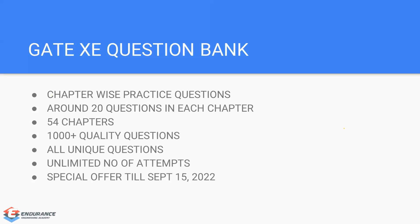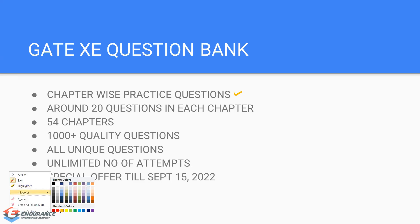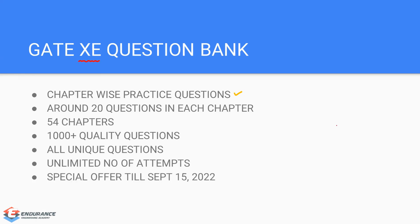When it comes to the GATE XC Question Bank, it contains chapter-wise practice questions oriented towards GATE XC. These are not direct straightforward questions — they are oriented towards GATE XC, meaning the questions will be at a higher level. The level of questions in GATE XC is a little higher than GATE ME, and similarly the question bank is planned so that question levels are equivalent to or even higher than GATE XC.